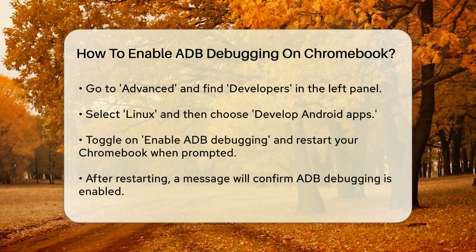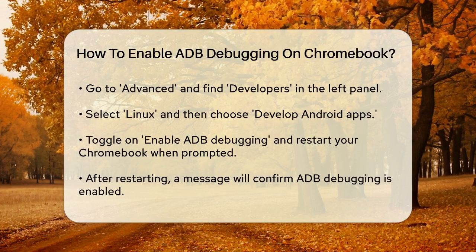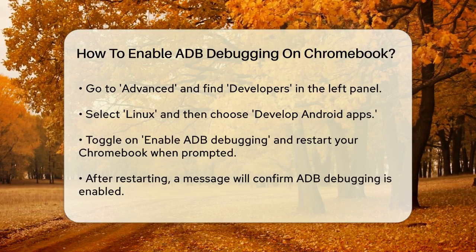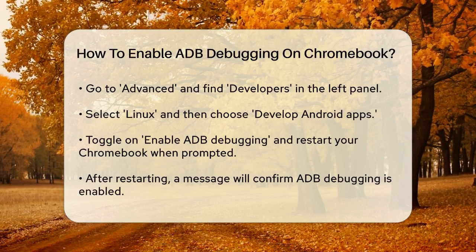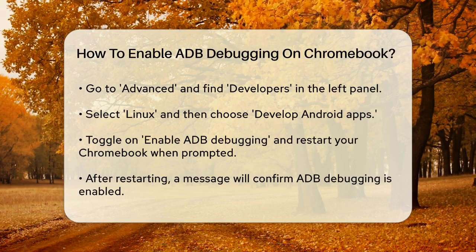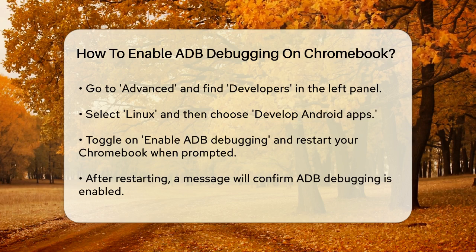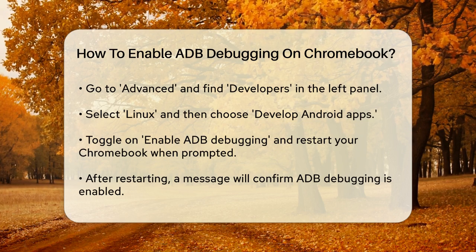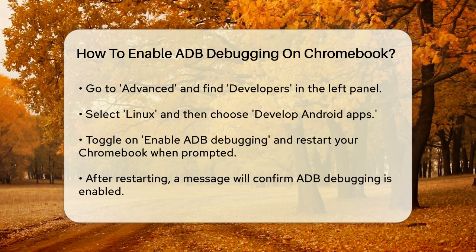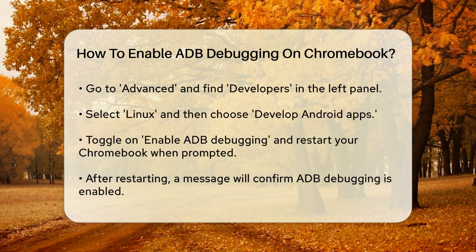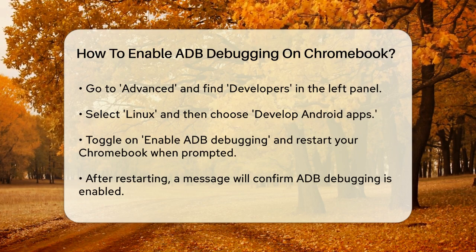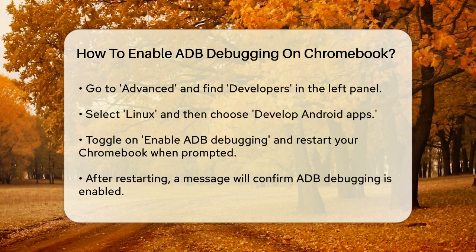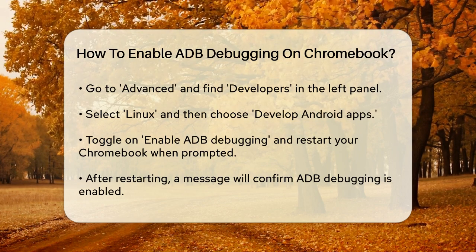Now let's get into the nitty-gritty. Open your Chromebook settings and select the time in the bottom right corner. Then go to Settings and navigate to the Advanced section. Here you'll find Developers on the left panel. Select Linux and then Develop Android Apps.